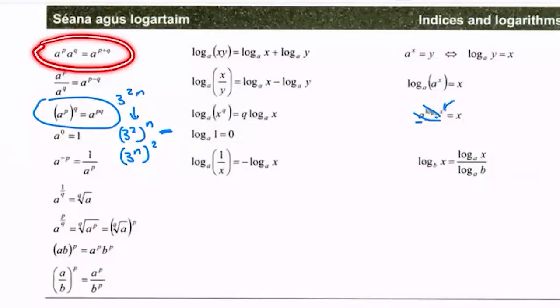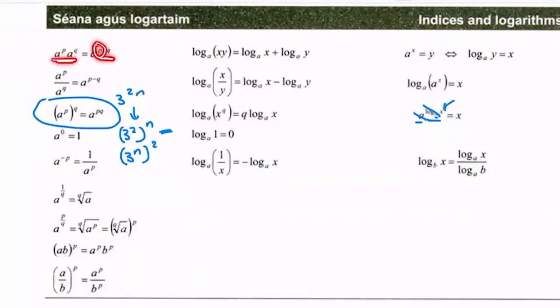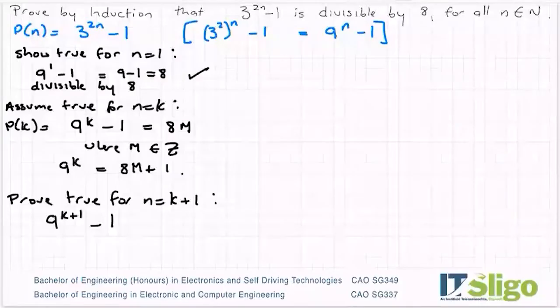It's this one this time because it's k+1, so I can break it up into the base number to one of the powers by the base number to the other power. So how does this look? It will be 9^k × 9^1 - 1.